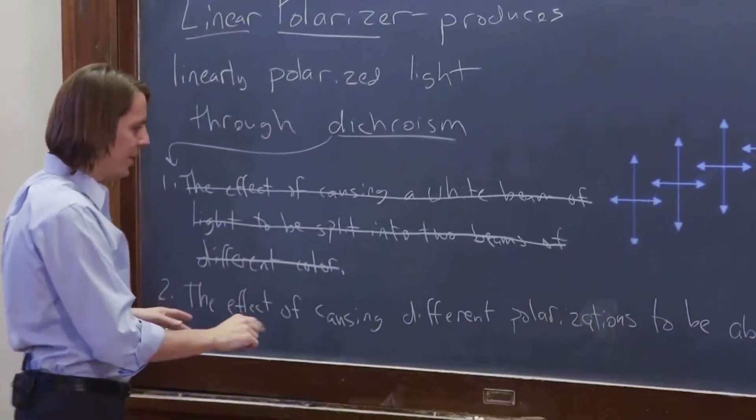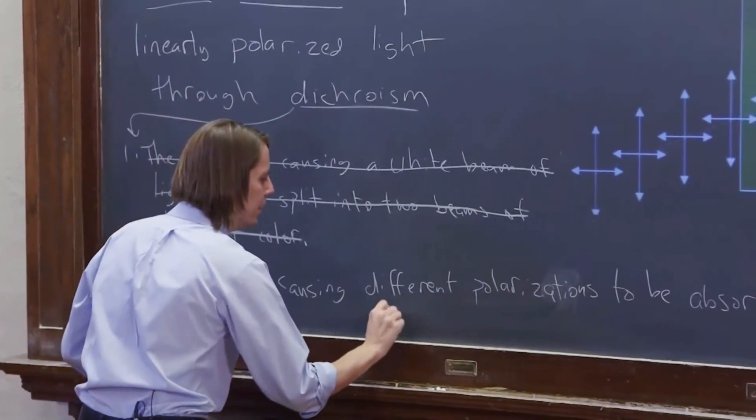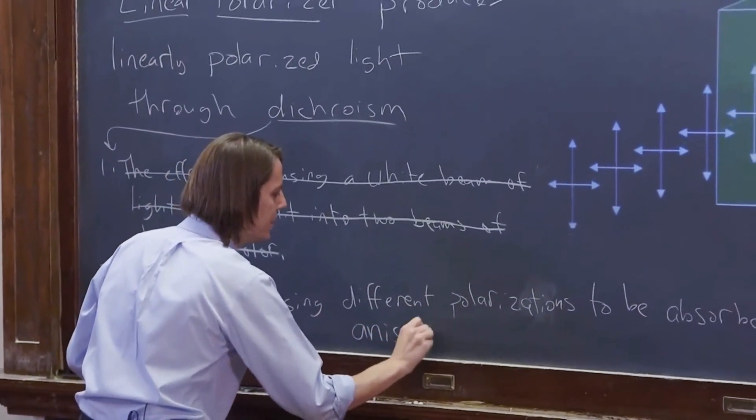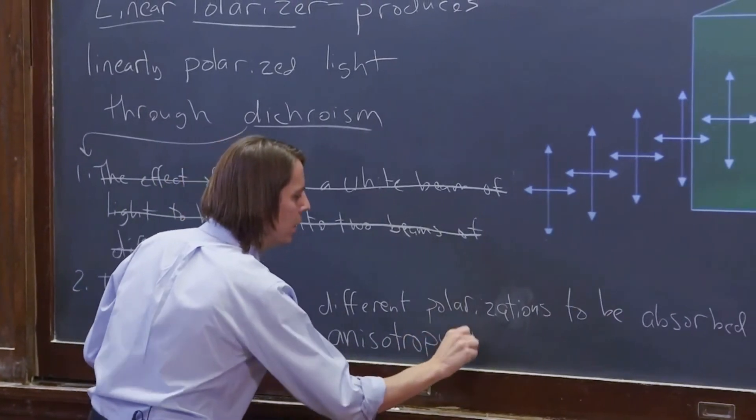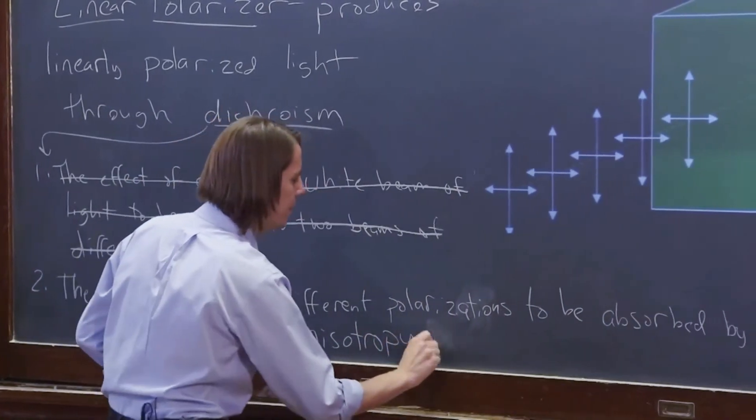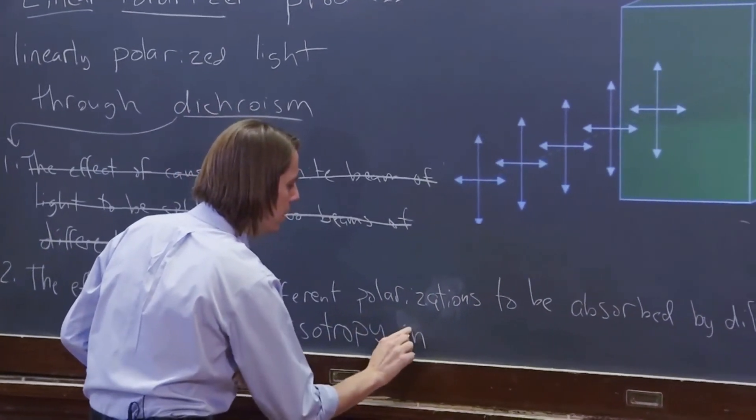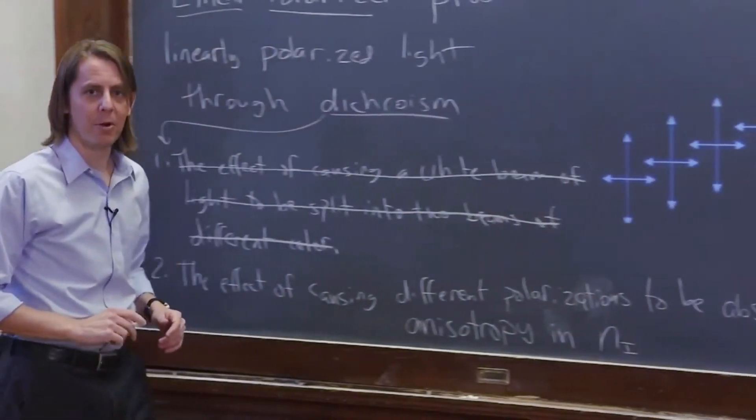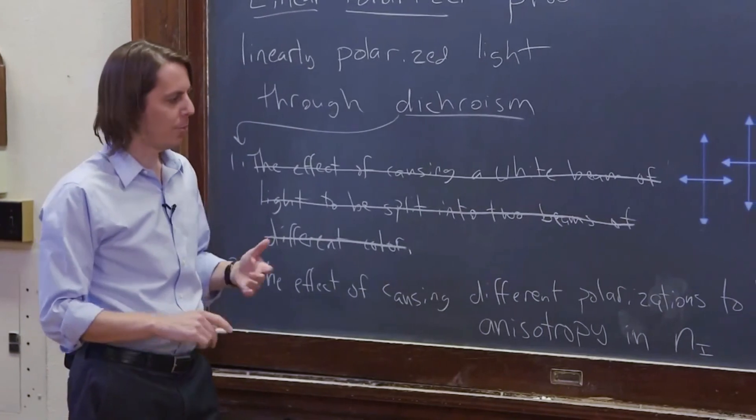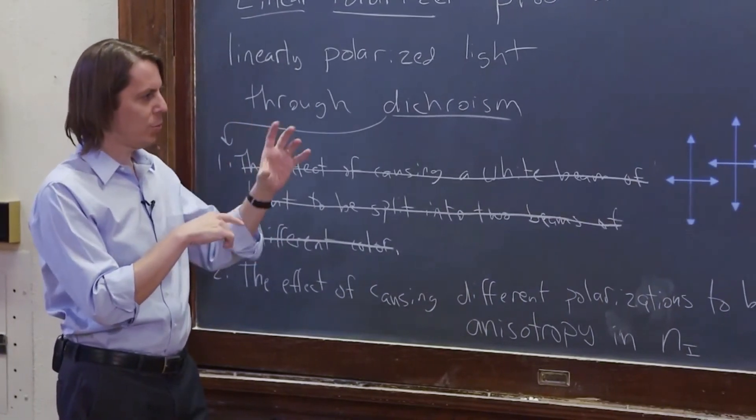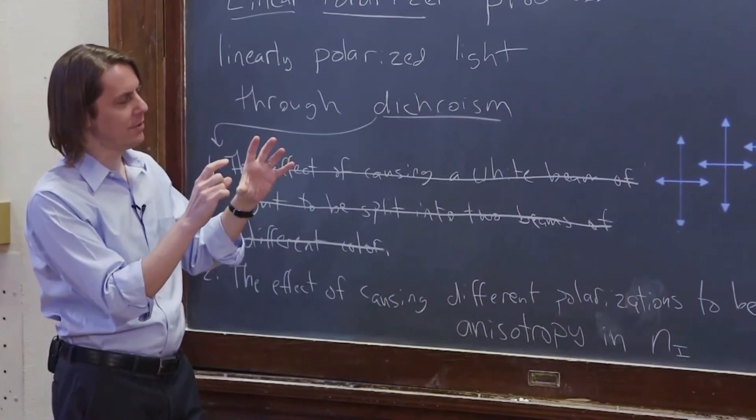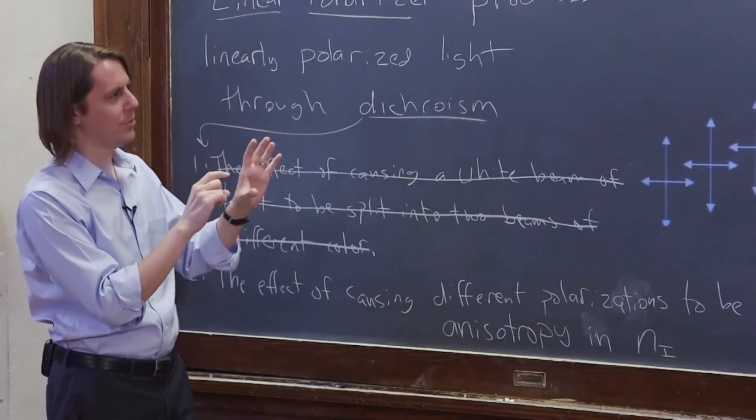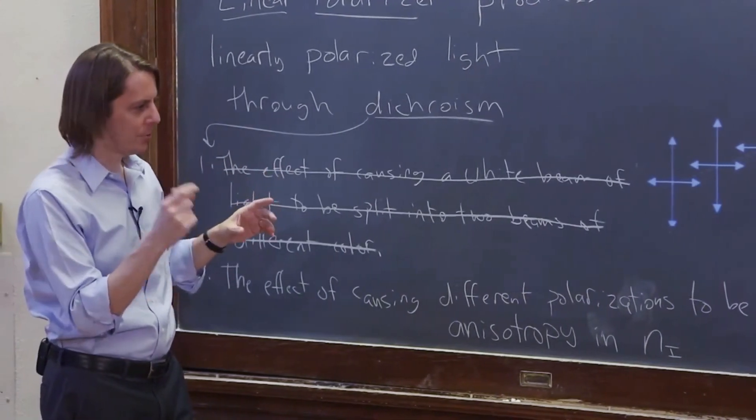So another definition of dichroism is anisotropy in I, the imaginary part of the refractive index. So remember, N is a complex number. It has a real part, it talks about how much you slow light down and how you change the wavelength inside the material, as an imaginary part, which talks about absorption.